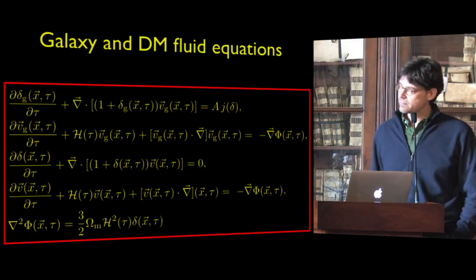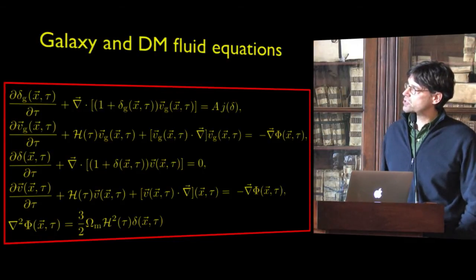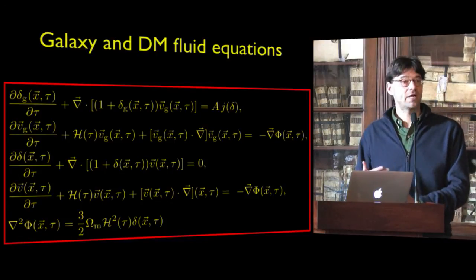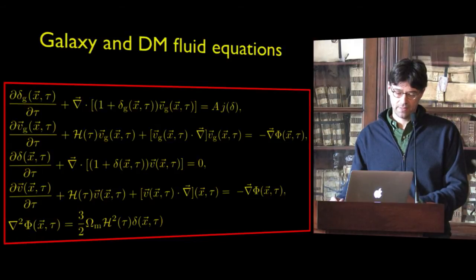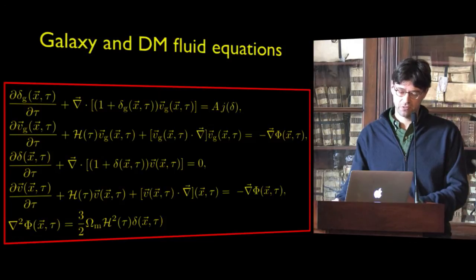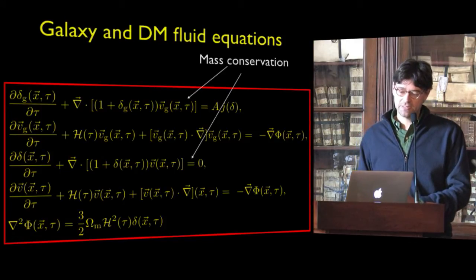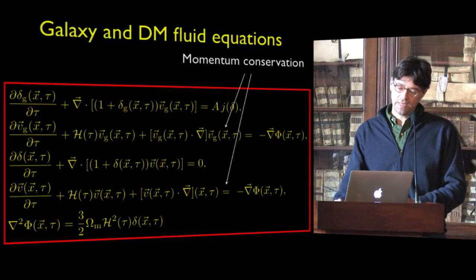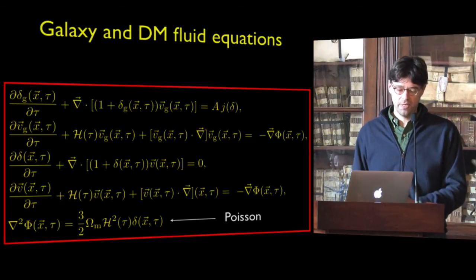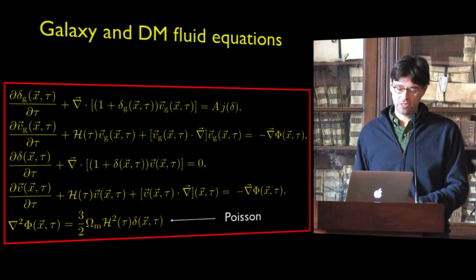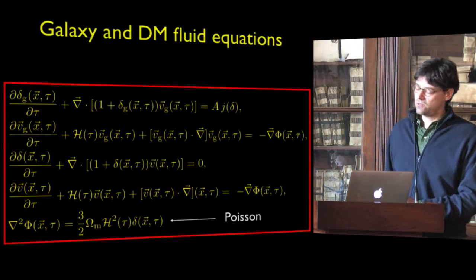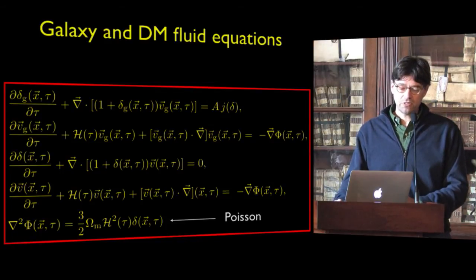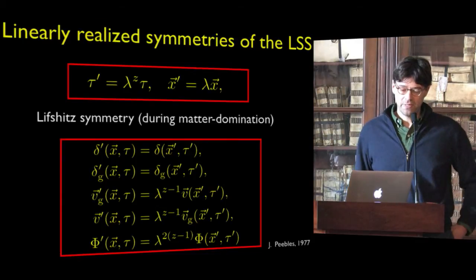The way we attacked this problem was very simple: we wrote down the equations for the galaxy distribution and the dark matter distribution — these are fluid equations, so there are simplifications underlying them. These equations are very simple: there is just mass conservation for galaxies and dark matter. In the galaxy equation you see a term which takes care of galaxy formation and merging. Then you have momentum conservation equations and the Poisson equation. In principle these equations are highly non-linear, but it is already quite interesting to start from them because we can learn something.